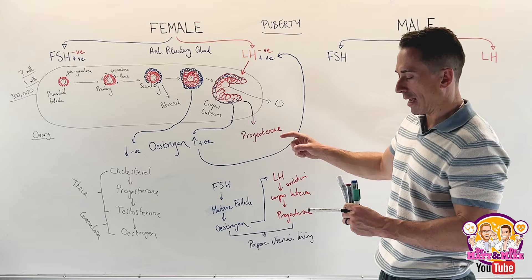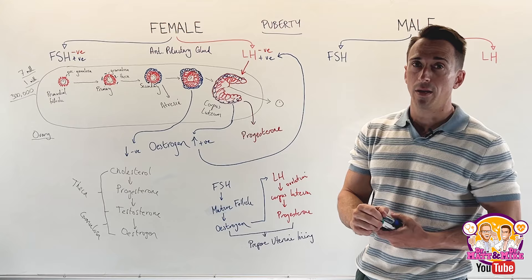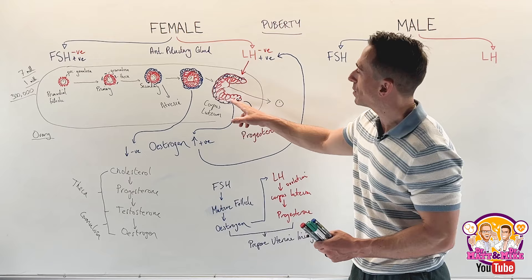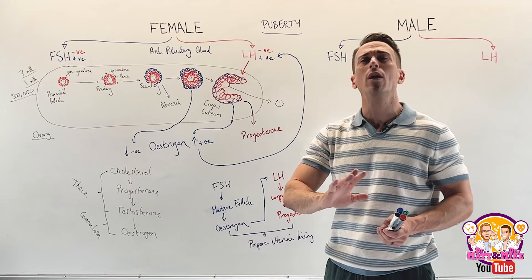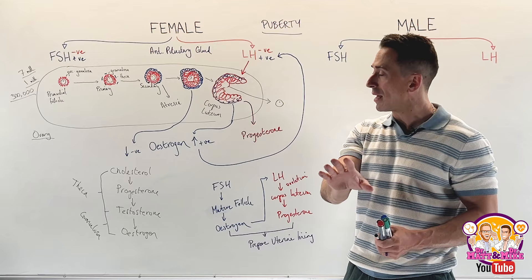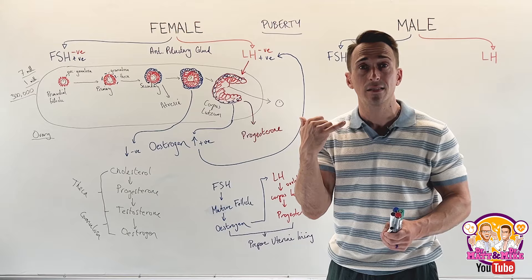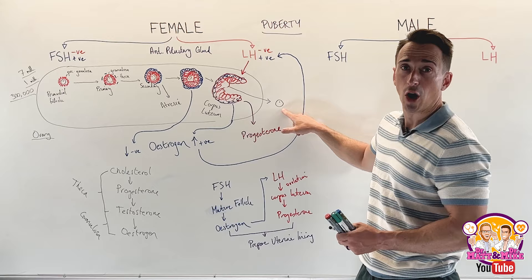The corpus luteum is like a parent saying goodbye to their child going off to university. They say: 'Goodbye, enjoy uni, but you need to call me when you get there. I'll give you enough money for 10 days, but if you don't call me within 10 days, I'm cutting you off.' The parent is the corpus luteum, the child is the ovum, and the money is the progesterone.